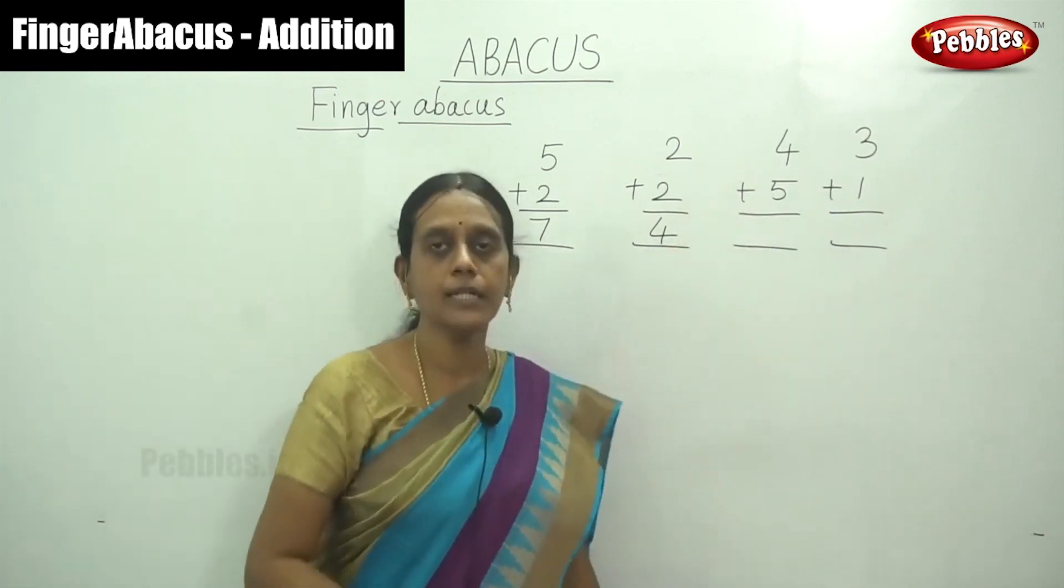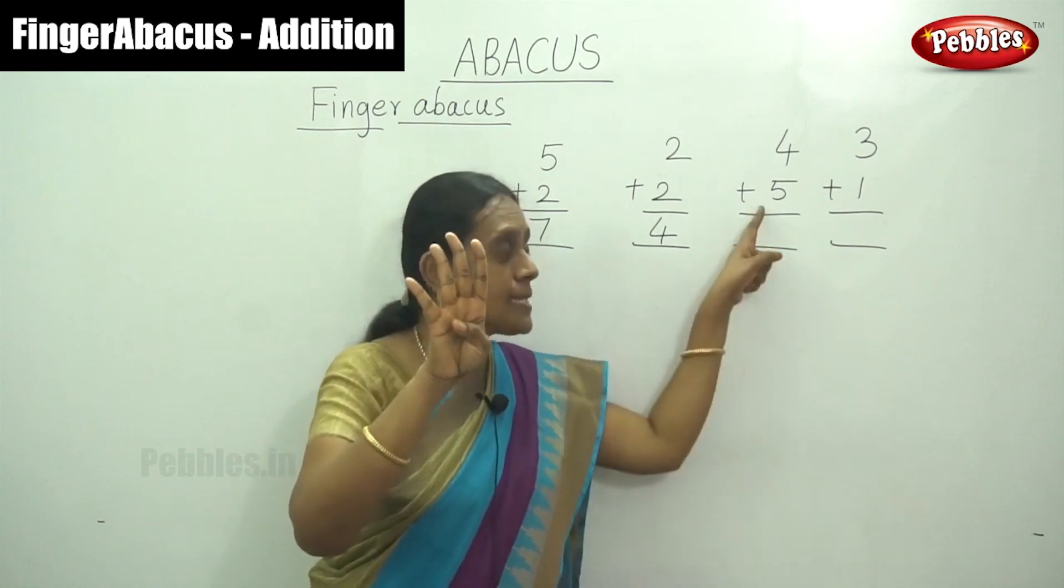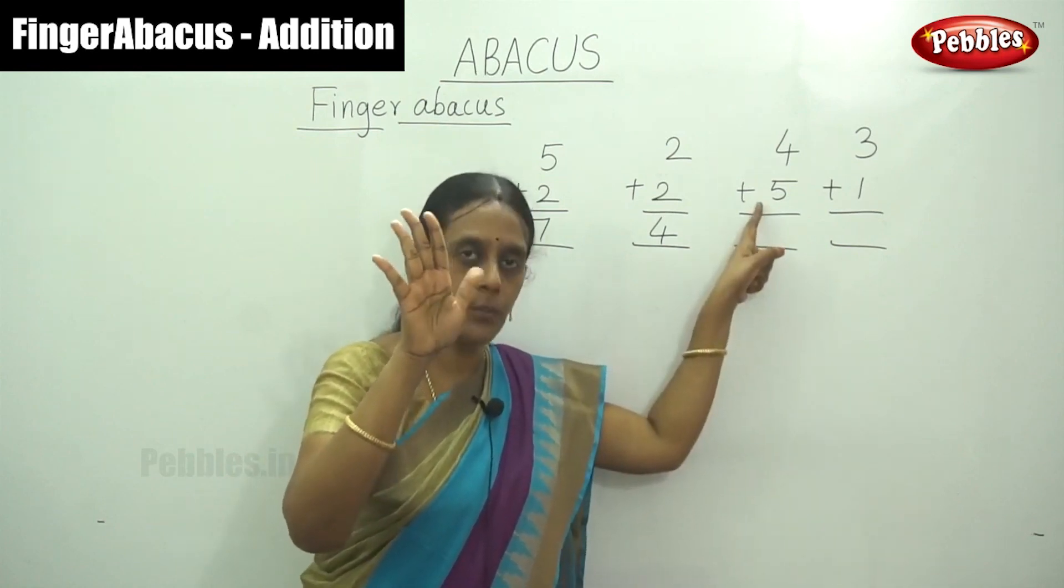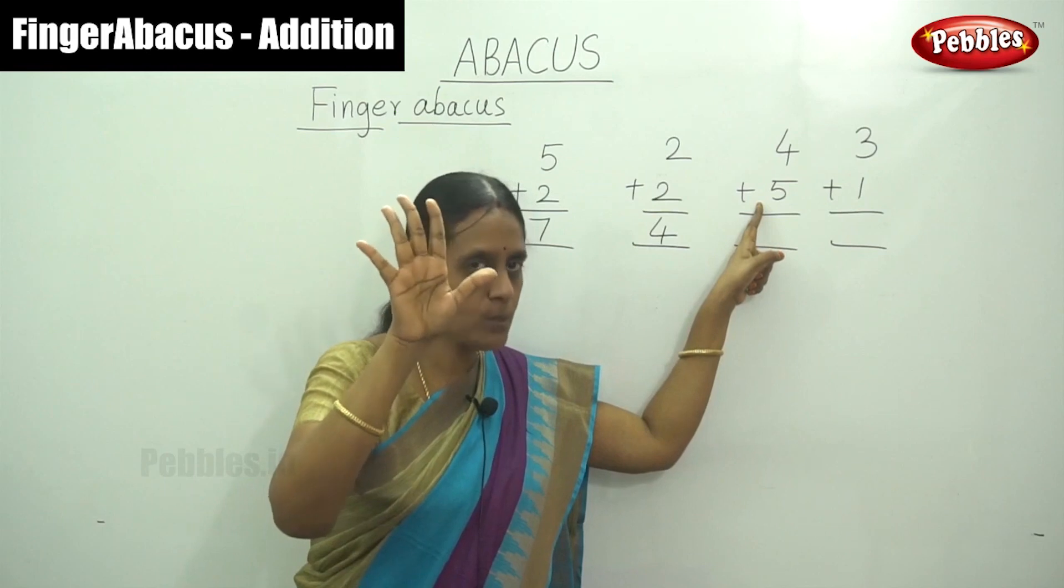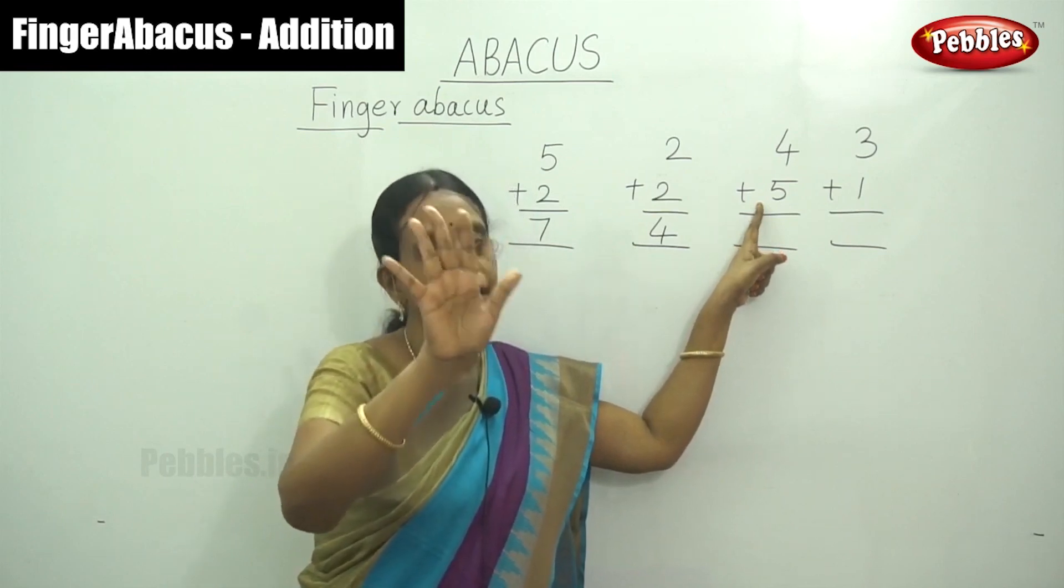And next first number that is 4, plus 5. Add on your thumb finger. Its value is 5. Now the answer is what? 9.